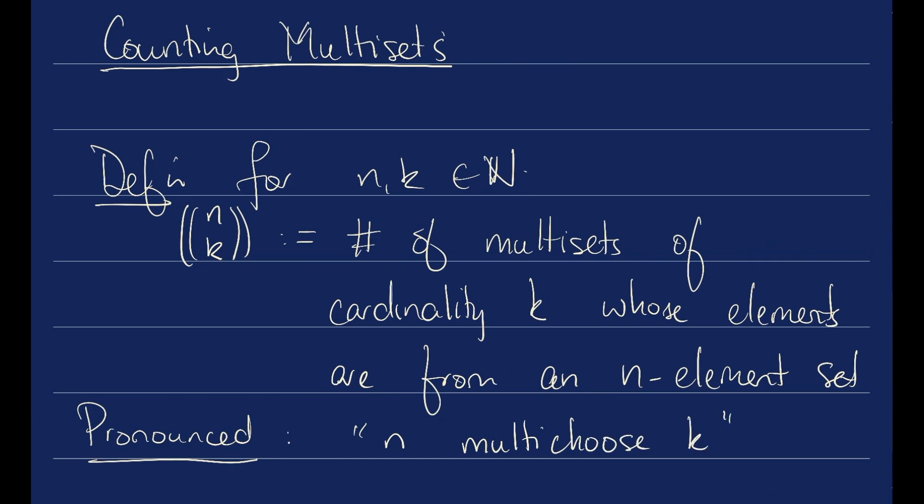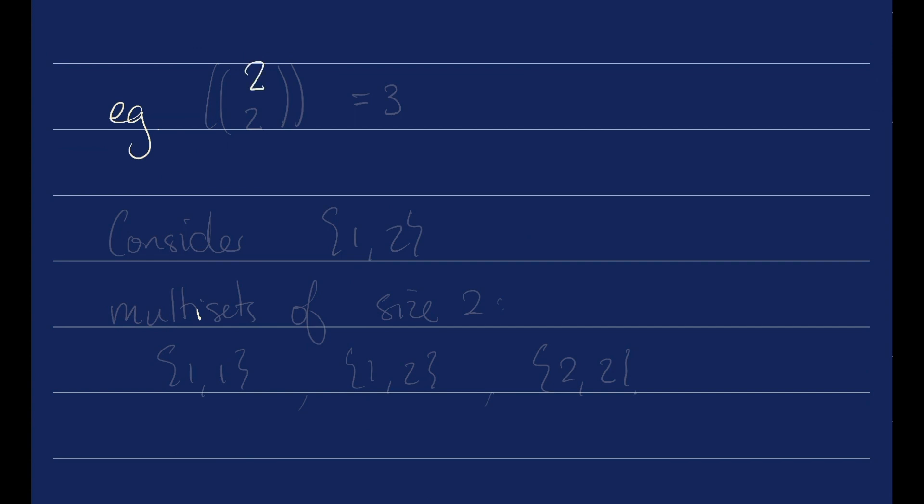Example: 2 multi-choose 2 is going to be 3 because we're going to consider a set of size 2. We're going to think of all the multi-sets of size 2, of cardinality 2. We're going to have 1, 1. We're going to have 1, 2. And we're going to have 2, 2.